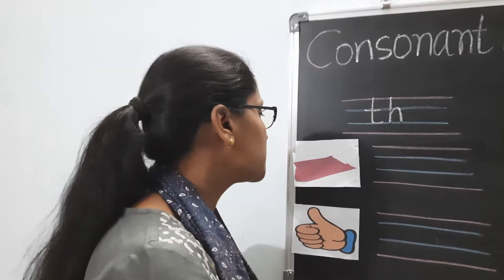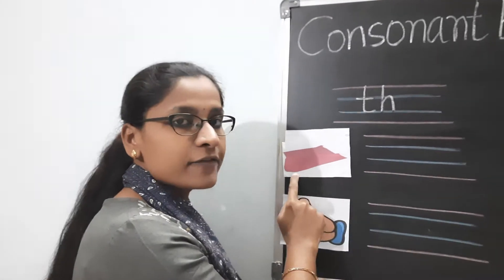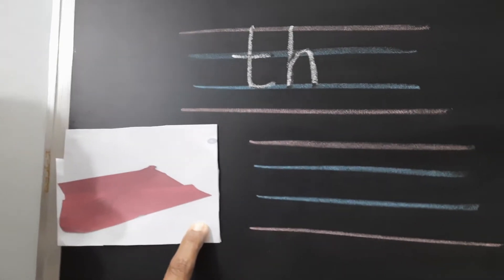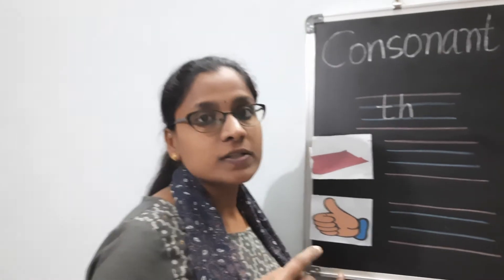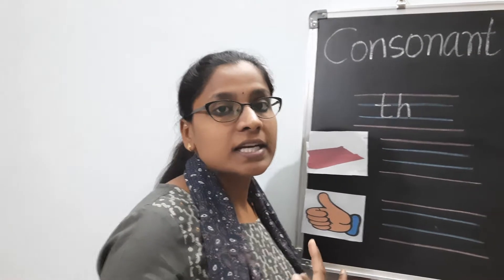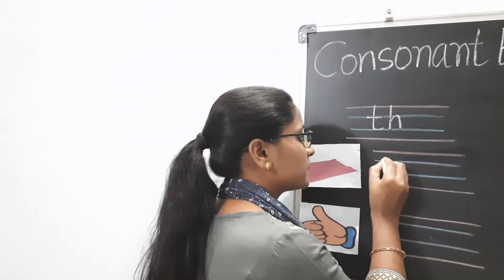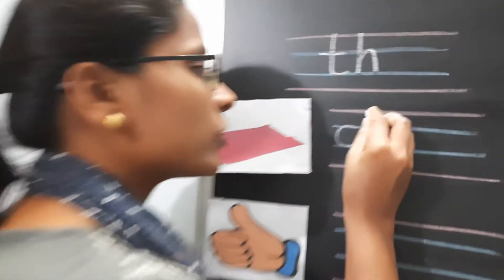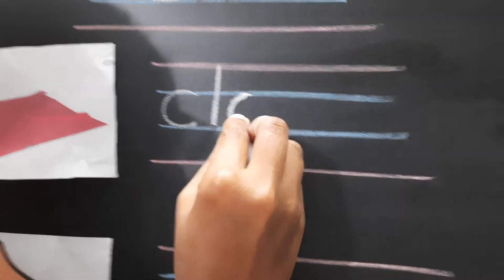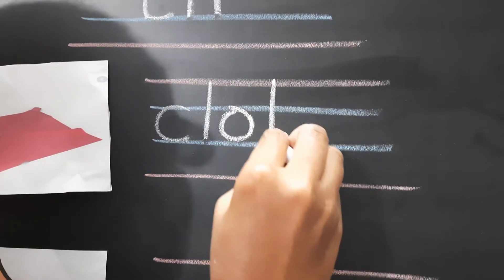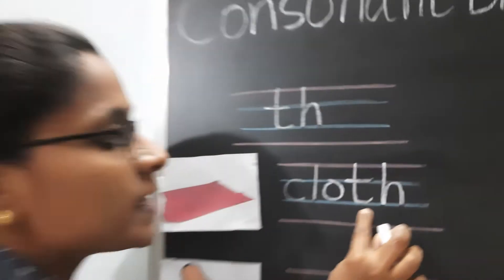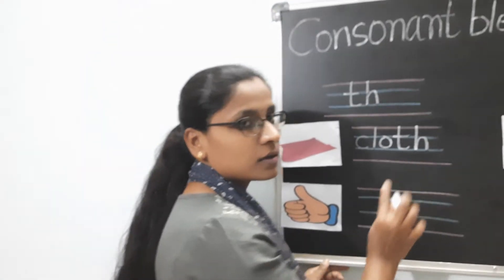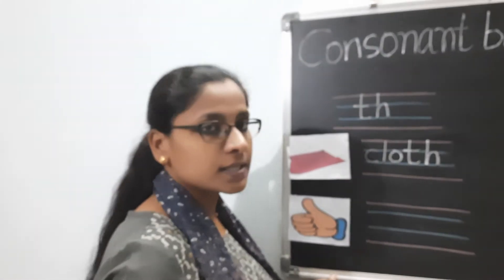Let's see what is the first example here. What is the first picture children? The first picture is cloth. When you are saying the word cloth, it is ending with the blend TH. Let's write the word cloth: C-L-O-T-H. Cloth. So it is ending with the blend TH, that is TH sound.